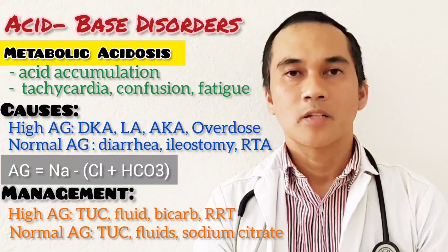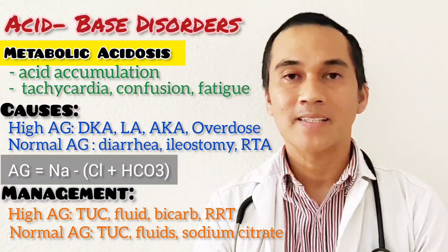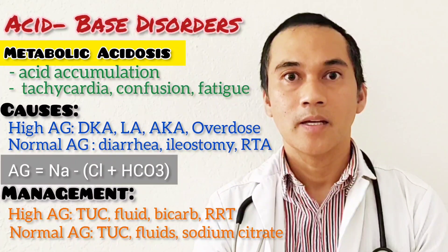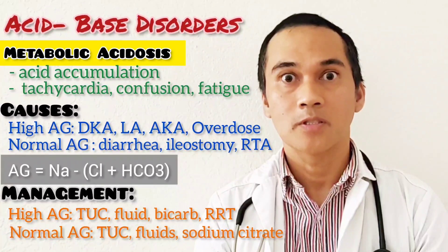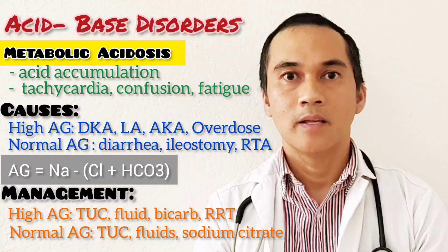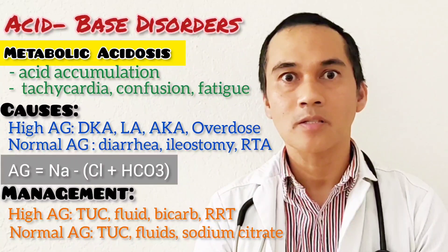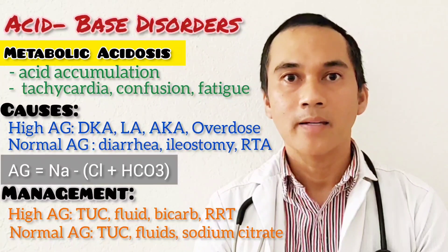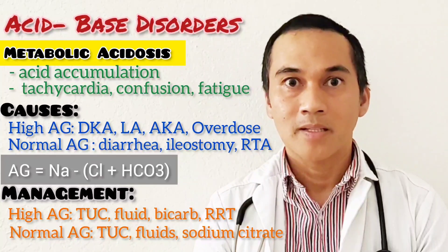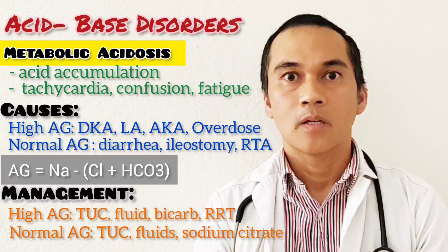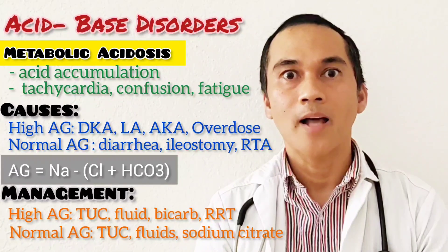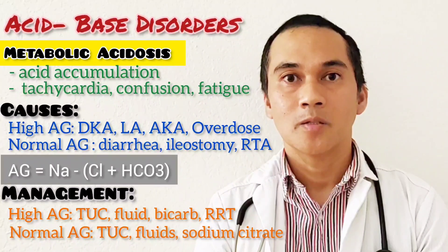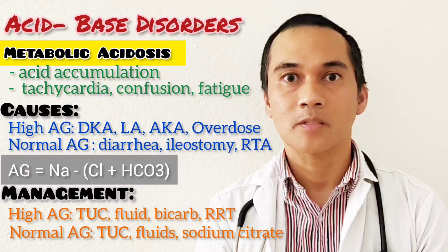Let's proceed with metabolic acidosis. Metabolic acidosis is the accumulation of acid and the loss of bicarbonate. Clinical presentation includes tachycardia, headache, fatigue, and confusion. There are two kinds: high anion gap and normal anion gap. For the high anion gap, these include diabetic ketoacidosis, lactic acidosis, alcoholic ketoacidosis, and drug overdoses such as salicylates. So aspirin causes both respiratory alkalosis and metabolic acidosis.